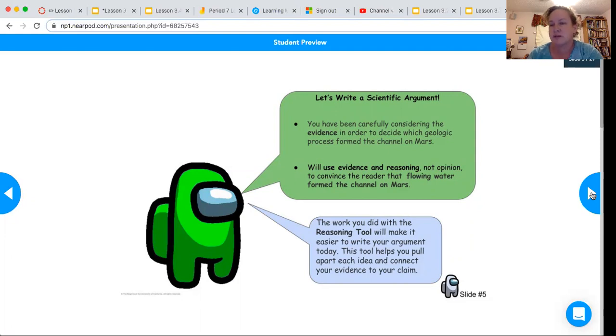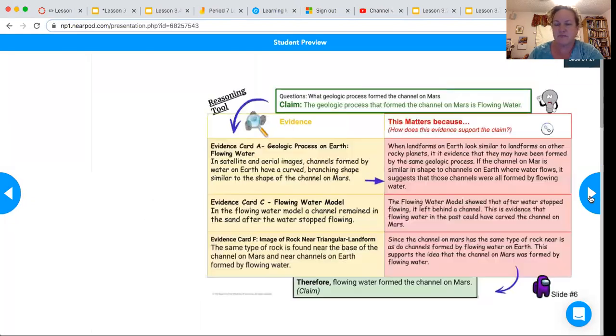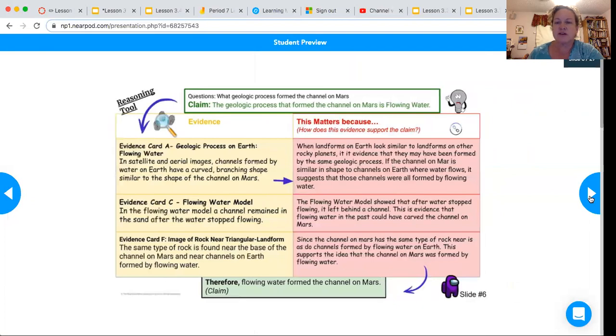So the work that we did with the reasoning tool is going to make it easier for us to write our argument today. So here is the reasoning tool and I'm going to take a little bit of time to talk about this. So remember that the question is at the top. What geologic process formed the channel on Mars?